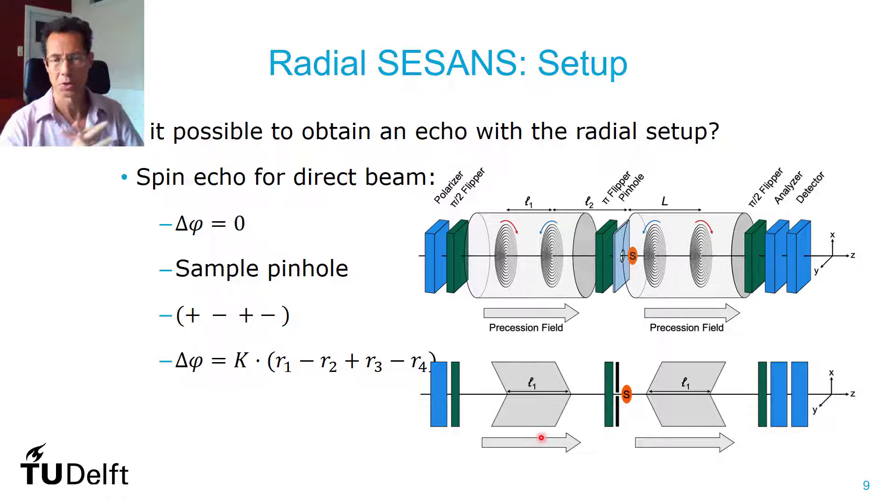What you want is a spin echo for the direct beam, independently on how you go through the system. It will have a phase change only of zero. It might be needed to have a sample pinhole. And this will be the geometry with the currents in which you mimic this setup.